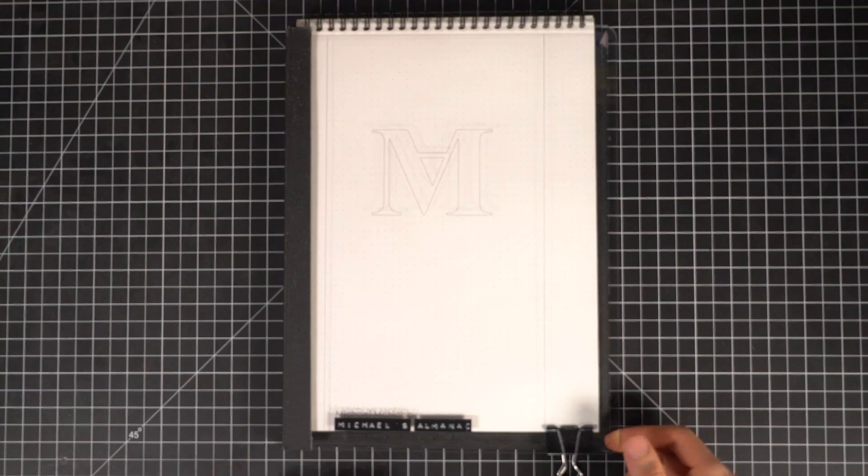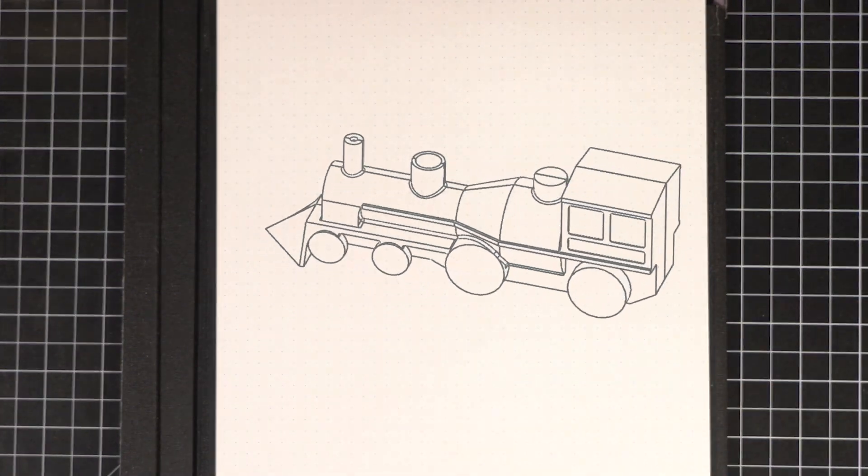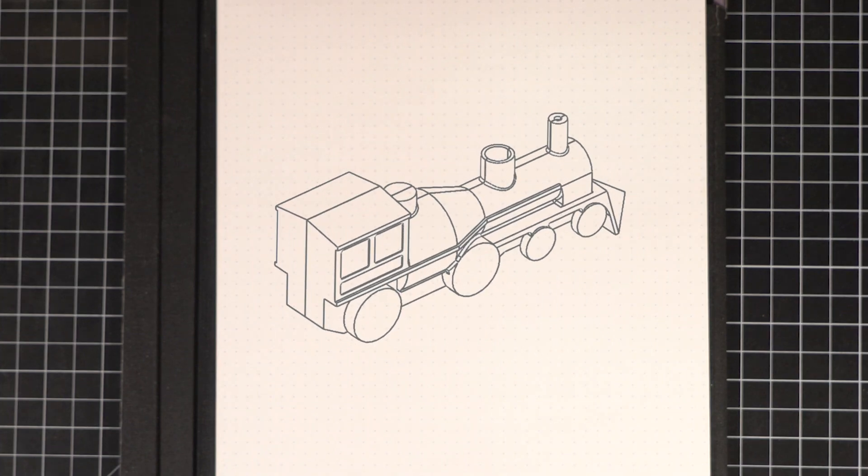Several months ago, I had this idea to create an incense holder that used smoke as a part of its design. I wanted to model it after an old-fashioned steam locomotive, but instead of coal producing the smoke, this train runs on incense.